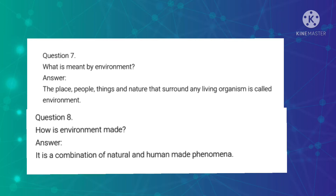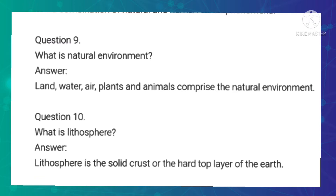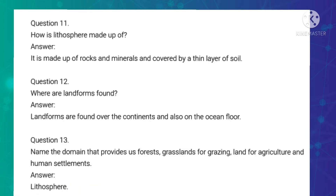Eighth question: How is environment made? Answer: It is a combination of natural and human-made phenomena. Ninth question: What is natural environment? Answer: Land, water, air, plants and animals comprise the natural environment. Tenth question: What is lithosphere? Answer: Lithosphere is the solid crust or the hard top layer of the earth.